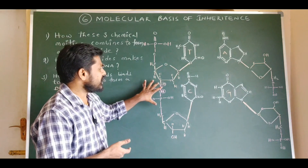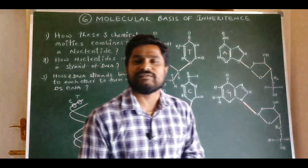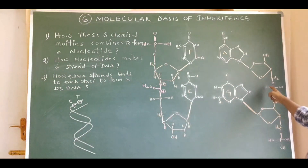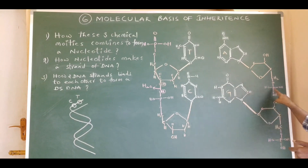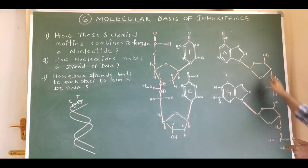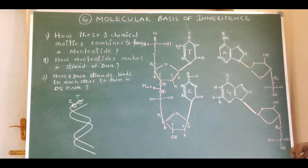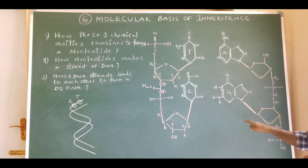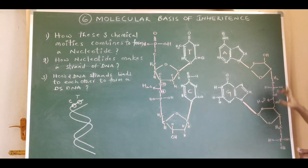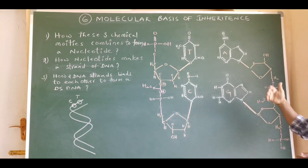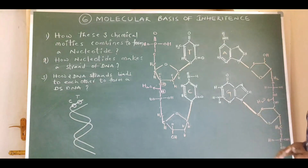The formation of this phosphoester bond occurs in the same way in the opposite strand of the DNA molecule. This is the adenine nucleotide, whose phosphate group was already involved in a phosphoester bond with the fifth carbon of its pentose sugar. The same phosphate group also forms another phosphoester bond with the third carbon of the pentose sugar of the adjacent nucleotide, by the elimination of one molecule of water.